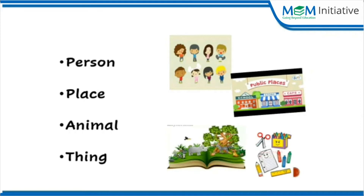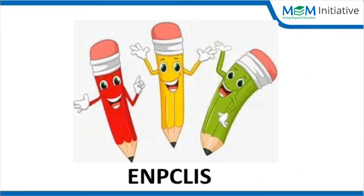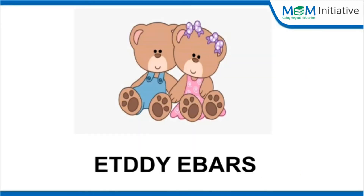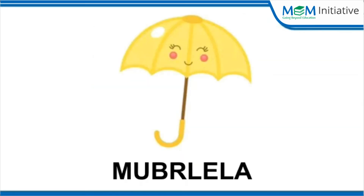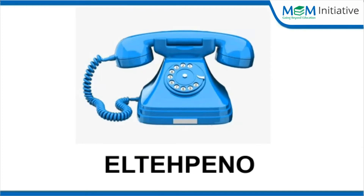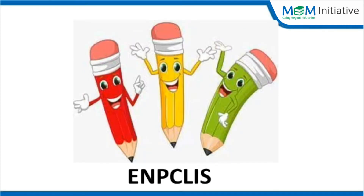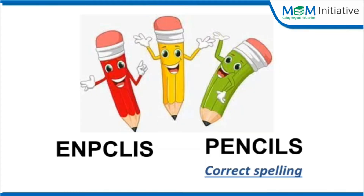Now look around you and tell me any two naming words and show them. Now I am going to show you some things, but they are not written in proper spellings, so you have to correct these spellings. Let us do the first one. Can you tell me what are these? These are some pencils, so we have to write the correct spelling of pencils. Similarly, you have to do the rest.